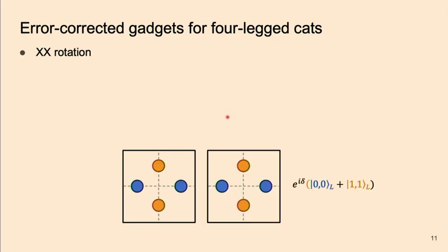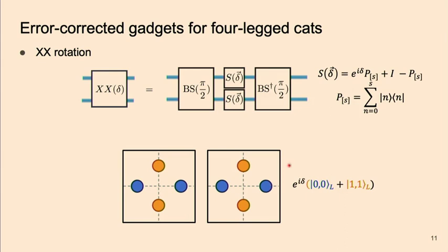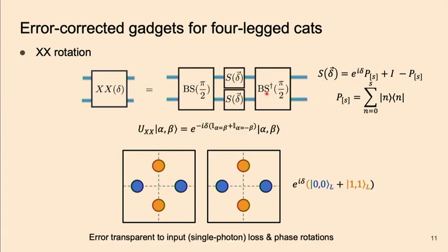Another interesting operation is the XX rotation, which is done using two cats. You do the XX rotation by applying a natural phase when both legs are horizontal or both are vertical — you only apply a phase when the legs are aligned, either horizontally or vertically. What we do is use a beam-splitter interaction to mix the two input modes, apply a phase shift around the vacuum, and then undo the beam splitter. This gives a natural phase if and only if the two coherent states have the same amplitude and are either phase-aligned or anti-aligned. That's exactly the operation we want for the four-legged cat. Importantly, this gadget is error-transparent to input photon loss and dephasing errors.